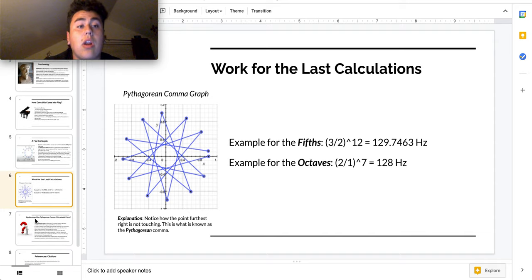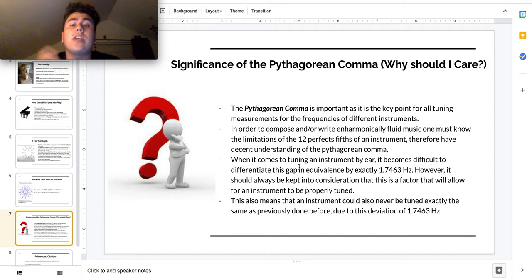So it's a little confusing, but I'll explain the significance of that in this slide. So significance of the Pythagorean comma, why should I care? The Pythagorean comma is important as it is a key point for all tuning measurements for frequencies of different instruments. In order to compose and or write inharmonically fluid music, one must know the limitations of the 12 perfect fifths of an instrument, therefore have a decent understanding of the Pythagorean comma. When it comes to tuning an instrument by ear, it becomes difficult to differentiate the gap in equivalence by exactly 1.7463 hertz, which is the deviation between those two numbers. However, it should always be kept into consideration that this is a factor that will allow for an instrument to be properly tuned.